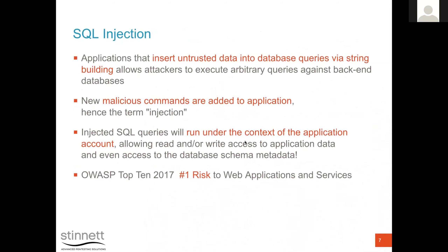The core idea of SQL injection is that untrusted data is being used against databases via string building — a very important concept. Once you inject commands into the application, you're able to run SQL commands as the SQL server, operating in the context of the application account. Whatever permissions that account has on the underlying infrastructure, you operate with those same permissions. This is the number one risk on the OWASP Top 10 for very good reasons.